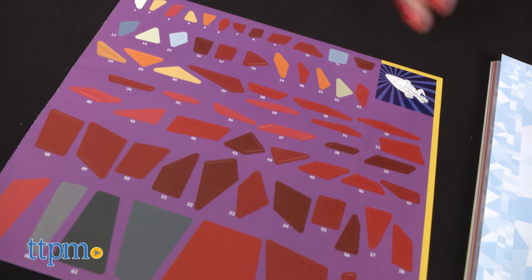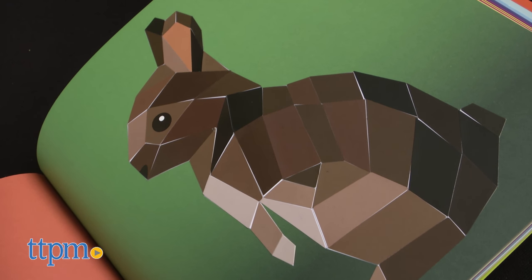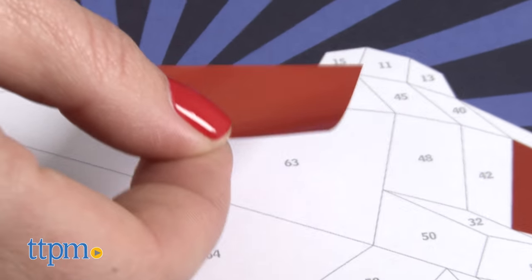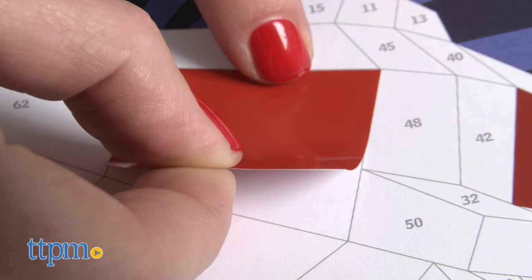Since the stickers are oddly shaped, this has a puzzle feel to it as well. It took us about 20 minutes to make the rabbit, and since you have to be so precise with placement, it's best suited for kids 7 to 9 years old, though some 5 and 6 year olds would enjoy this as well.